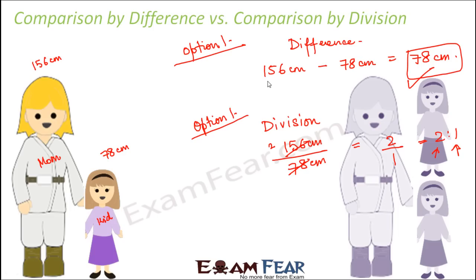In case of division, we do not rely on the actual difference, because the actual difference will keep changing with changing values. In many scenarios, comparison by division is better. For example, if you know the mother's height is twice the daughter's height, even without knowing the exact heights, you can estimate — just imagine two daughters stacked together and that gives you the mother's height. So the ratio approach gives a better sense of comparison.